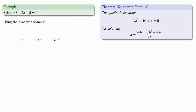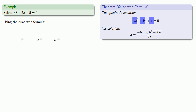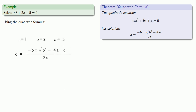Here, a is the coefficient of x squared, b is the coefficient of x, and c is the constant term. So that gives us a equals 1, b equals 2, and c equals negative 5. We'll substitute those in and do a bunch of simplifications and calculations.